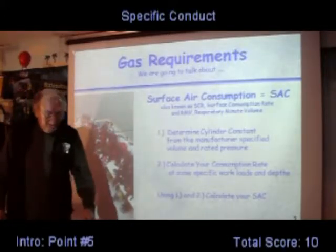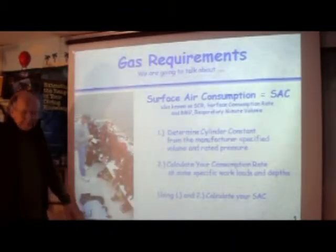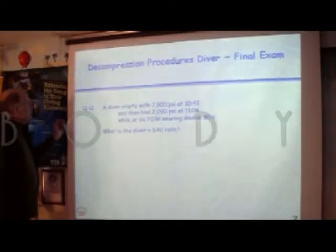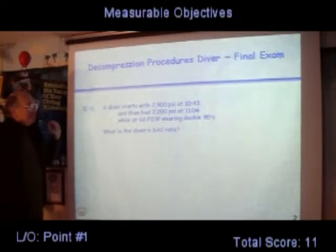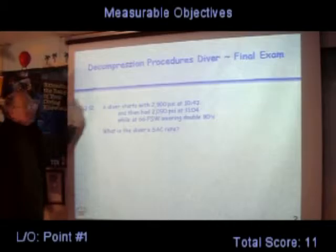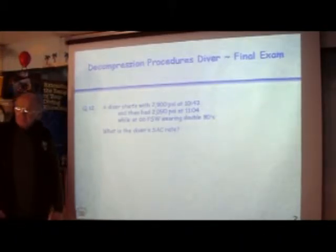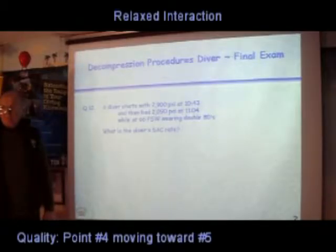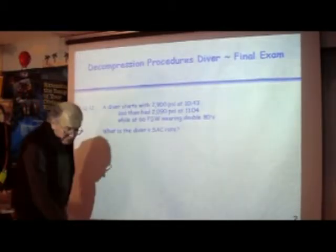For now, let's use my dive planning handouts and use a highlighter as you follow along. By the end of this discussion, you should be able to get the proper answer to question number 12. Maria, read the question please: A diver starts with 2,900 PSI at 1043 and then had 2,090 PSI at 1104 while at 66 feet of sea water wearing double 80s. What is the diver's SAC rate? So let's try to figure this out.